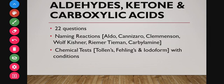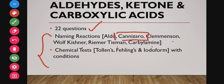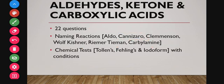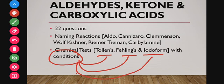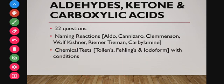The next topic is aldehydes, ketones, and carboxylic acids, from which 22 questions were asked — many from naming reactions. Key naming reactions include aldol condensation, cross-aldol condensation, Cannizzaro reaction, Clemmensen reduction, Wolff-Kishner reduction, Reimer-Tiemann reaction, and carbylamine reaction. You also have to know chemical tests: Tollens' test, Fehling's test, and iodoform test — which compound (aldehyde, ketone, or carboxylic acid) gives which test and under what conditions.